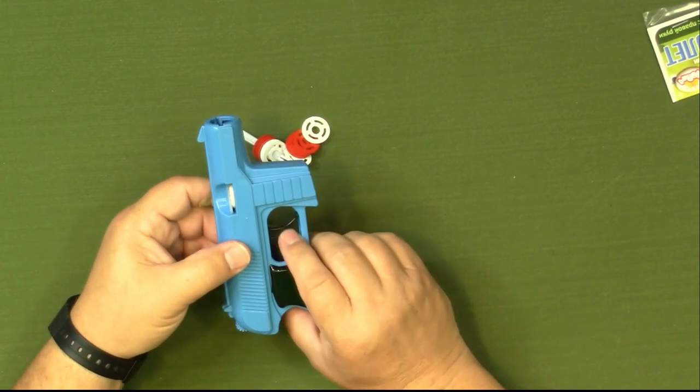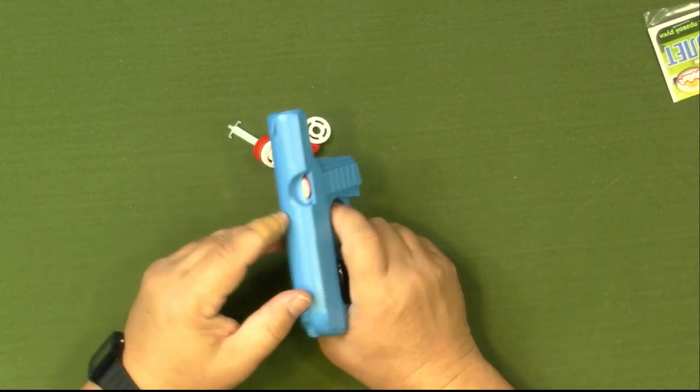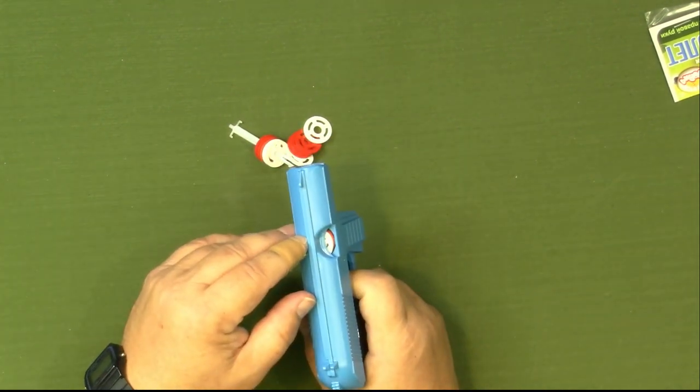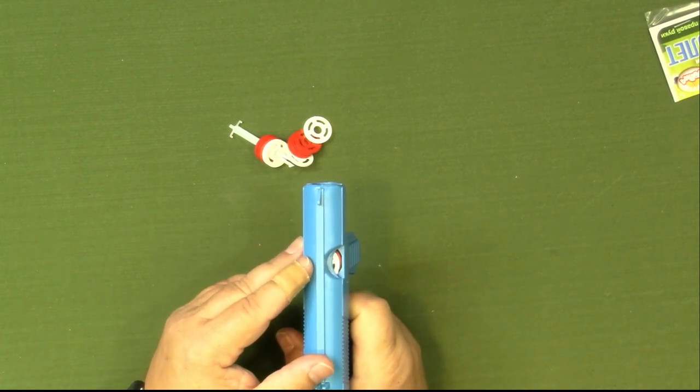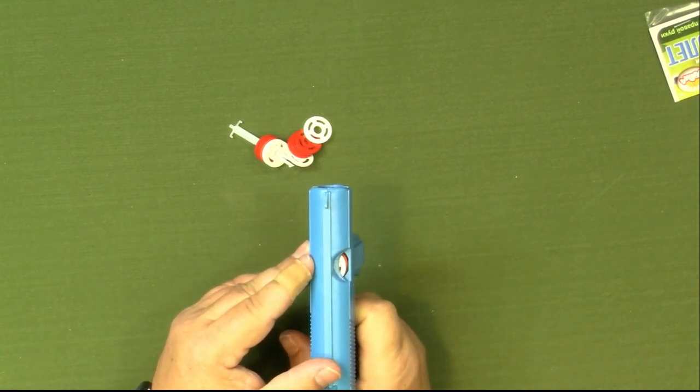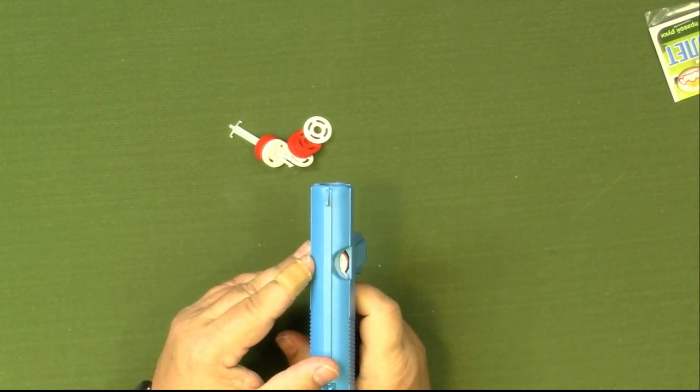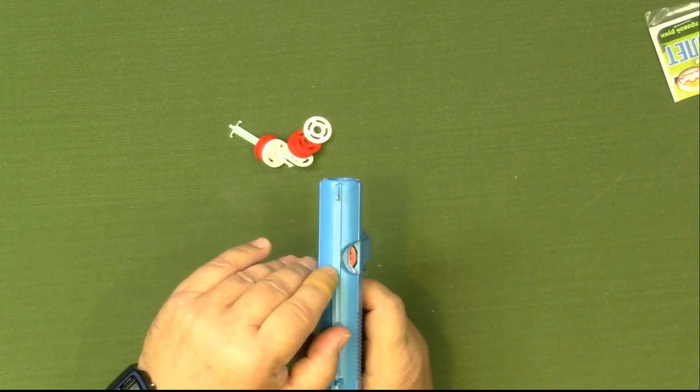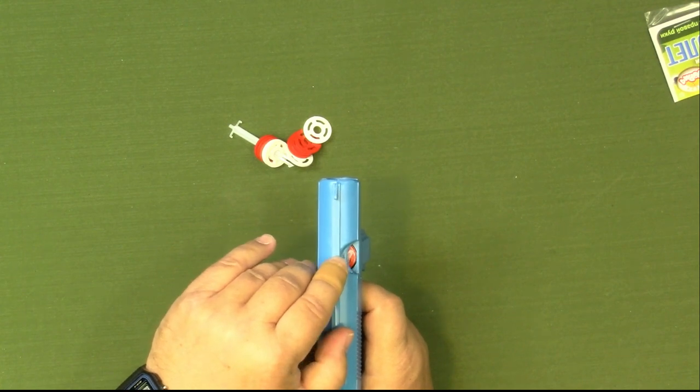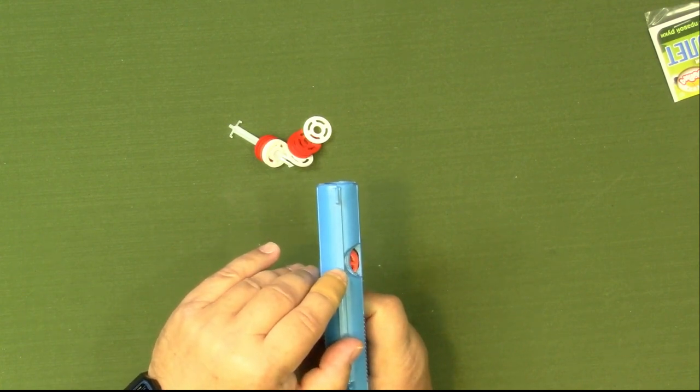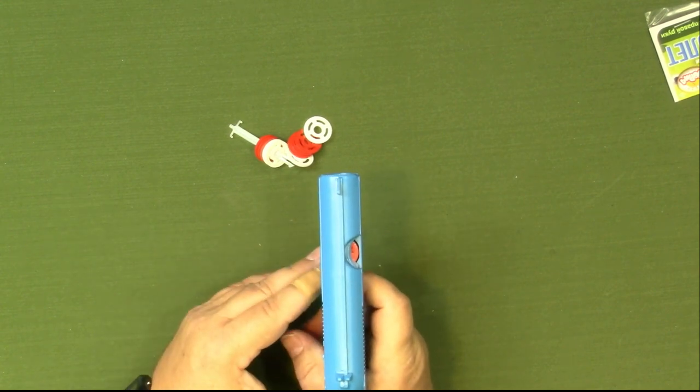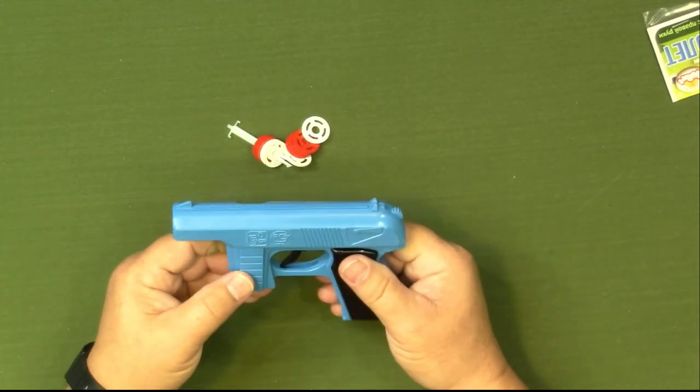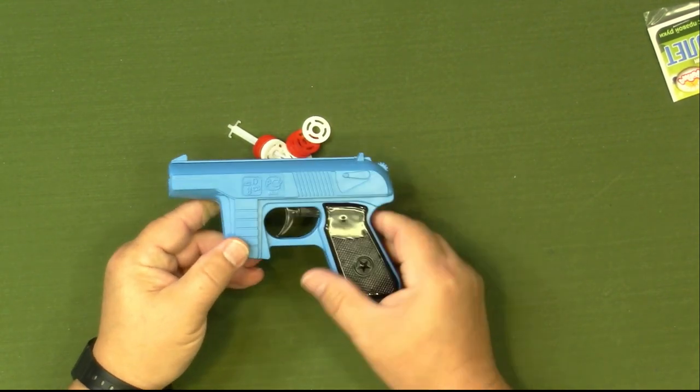And basically then you just pull the trigger, and when you pull the trigger back, that little lever will come back. And then at the rear of its travel, it will release and shoot the disc out. And you can see it easier there on the red one. As it comes back and then release and shoots. So it seems to work just like the ones I remember from when I was a kid. So we'll go ahead and take it out to the range and see how it does.